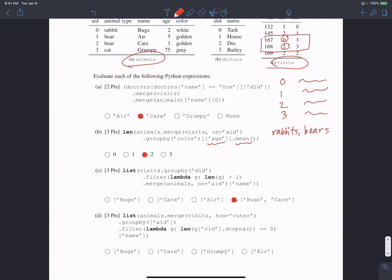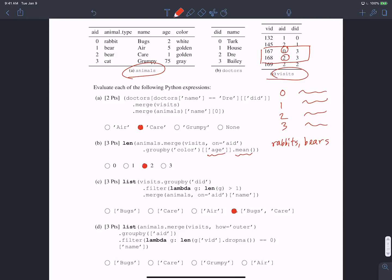In part d, we want a list of the result when we merge the animals table with visits, but now we're doing an outer merge instead of an inner merge. That means the animal with ID 3, grumpy the cat, notice he did not visit the doctor at all because there's no animal ID equal to three in the visits table. We're grouping by animal ID, so we'll have zero then something, one then something, two then something, and three then something. We're filtering only the animals who visited the doctors exactly zero times.